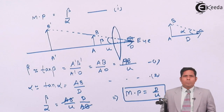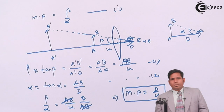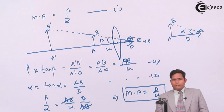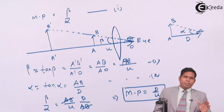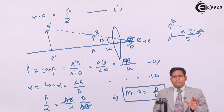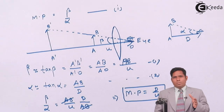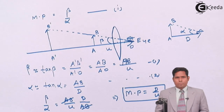In the next class, we will discuss how to find the magnifying power of the simple microscope in different cases — when the image is found at the least distance of distinct vision (D), and when the image is found at infinity. These correspond to the near point and far point. We will see where to place the object so the image is formed at D or at infinity. We will continue with that in our next video. Thank you.